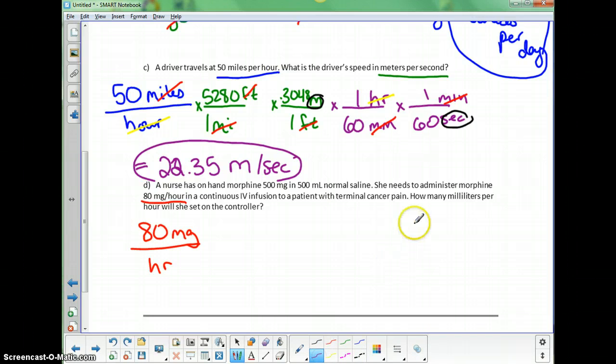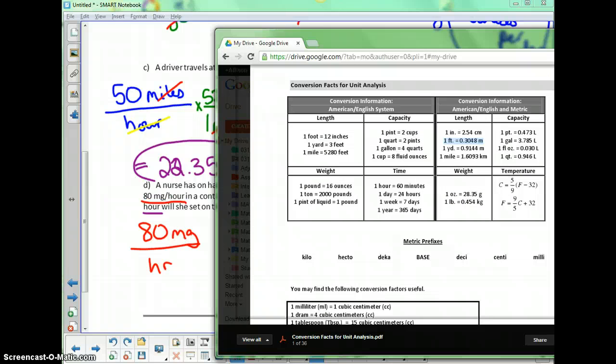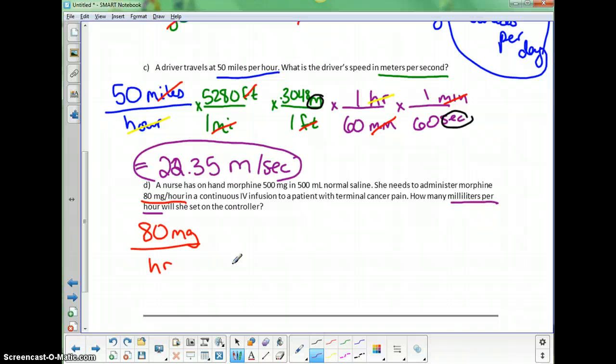My goal is to figure out how many milliliters per hour to set on the controller. Milligrams will not turn into milliliters because one's a measurement of weight and one's a measurement of fluid capacity. But I've got this conversion fact earlier in my problem that told me that the morphine was diluted into saline, therefore making a liquid solution out of it. This is the conversion fact I'm going to use for this problem.